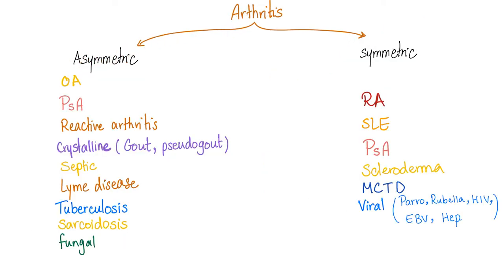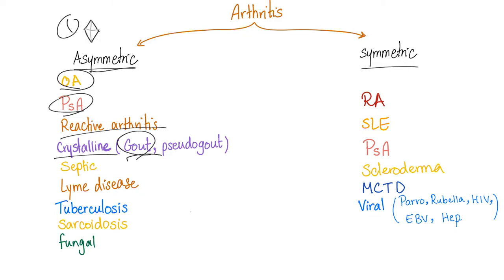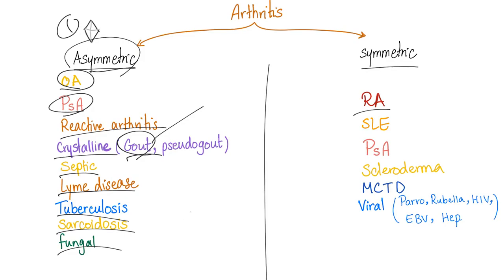Based on symmetry, we have asymmetric and symmetric arthritis. All monoarthritis, by definition, is asymmetric — if only one joint is involved, it can never be symmetrical. So osteoarthritis, psoriatic, reactive, crystalline gout, and septic arthritis are asymmetric. Lyme disease, tuberculosis, sarcoidosis, and fungal arthritis are also asymmetric. Symmetric arthritis is usually driven by antibodies, which don't discriminate — they affect right and left equally. Symmetric conditions include rheumatoid arthritis, lupus, psoriatic arthritis, scleroderma, mixed connective tissue disease, and viral arthritis.